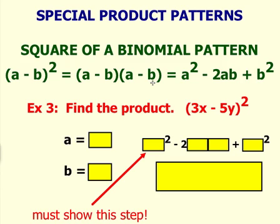When you do the FOIL method or use distributive property or use your times table format to multiply these two binomials together, you will get a squared minus 2ab plus b squared.